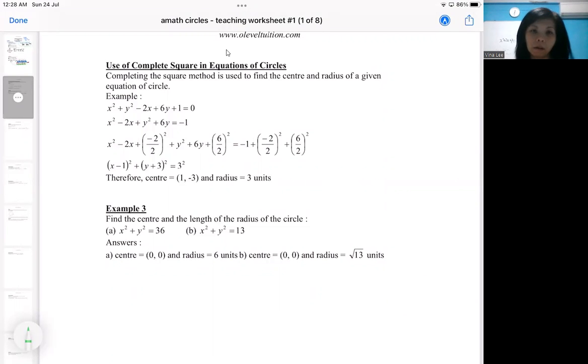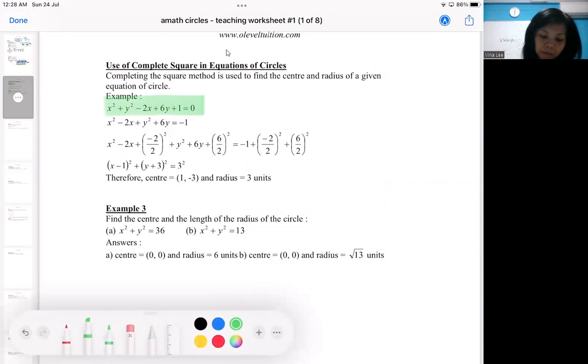So this is the opposite of putting in center and radius. Right now you are given the equation. From the equation, you are expected to be able to tell the center or radius. Even if the question doesn't ask for it, you must have the instinct idea to find center and radius. So what is the feature of this circle? The feature will lie with the center and the radius.